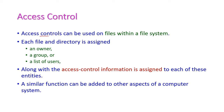Access control can be used on files within the file system. We already know that the file system has two entities: the first one is files and the second one is directories. Each file and directory is assigned an owner, a group, or a list of users who can perform operations on those files.